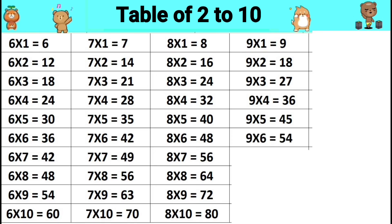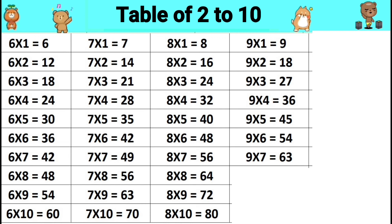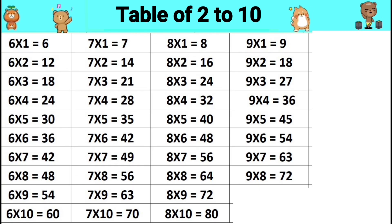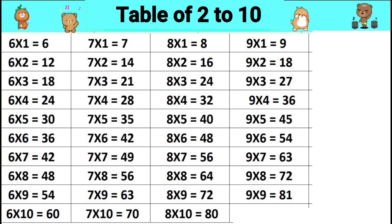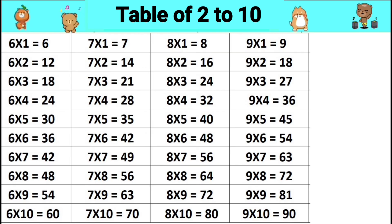Nine sixes are fifty-four. Nine sevens are sixty-three. Nine eights are seventy-two. Nine nines are eighty-one. Nine tens are ninety.